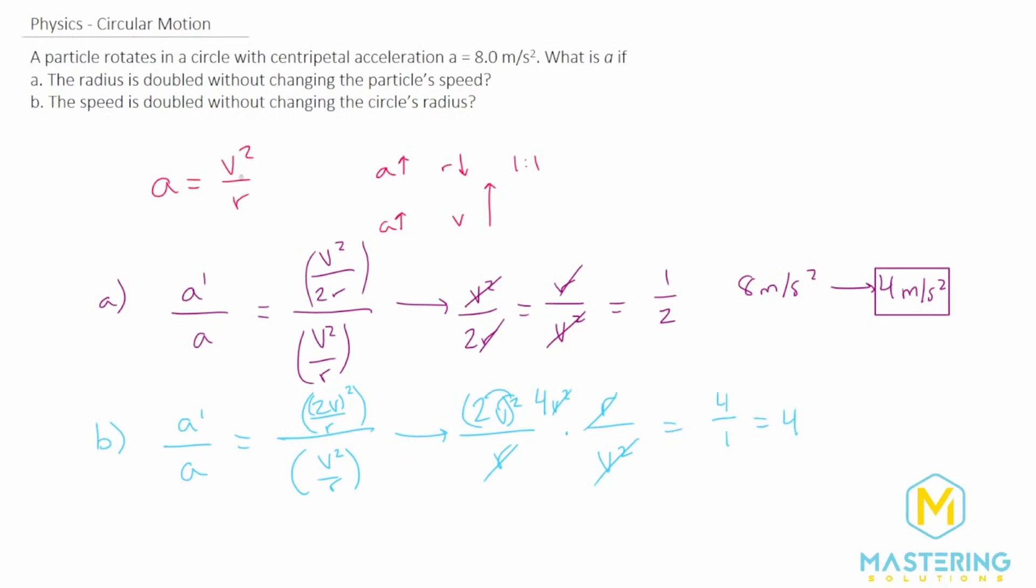What we're left with is 4 over 1, or 4. So if we double the speed but don't change the radius, we're quadrupling the acceleration. 8 times 4 gives us 32 meters per second squared for the new acceleration if we double the speed.